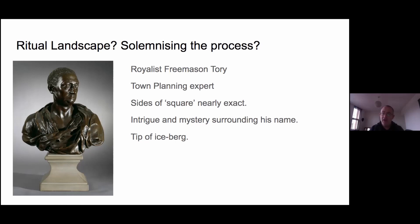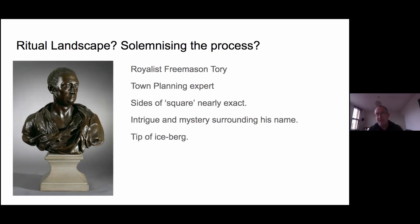Hawksmoor lived very much in Wren's shadow — a Royalist, a Freemason, and a Tory. He was a town planning expert. The size of his square is nearly exact — and even more so, if he'd actually built the Wapping church where he wanted to, the size of that square would have been almost exactly the same on each face, and that doesn't happen by accident. So what was he doing? I don't know exactly, but you've seen my best guess. There's still intrigue and mystery surrounding his name, and once you start delving into him, you realize what he was doing is just the tip of the iceberg.